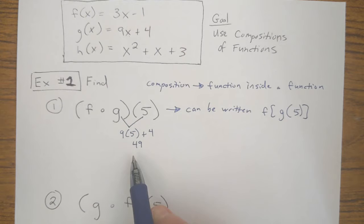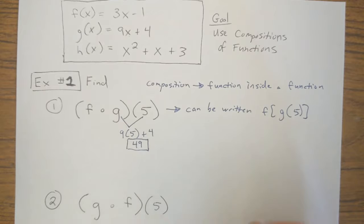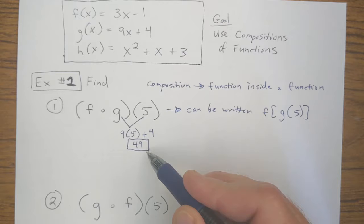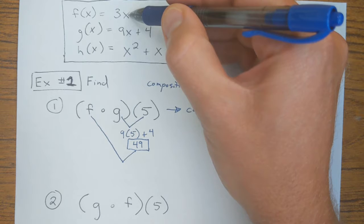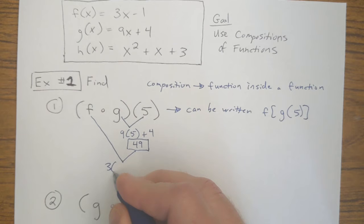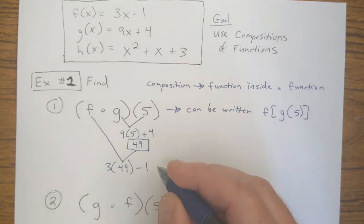So when I input a 5 into G, I get this output of 49. Now a lot of times I put a box around this output because that's not my final answer. It's kind of a preliminary answer. But now that I have this output of 49, now I have to take this output, 49, and now I'm going to input it into the F. In other words, I'm going to take away this X and replace it with this input of 49. Instead of 3 times X minus 1, I'm going to do 3 times 49 minus 1. Now this would be my final answer, 146.